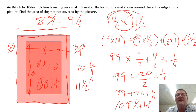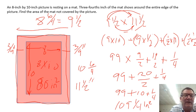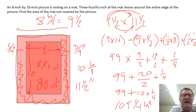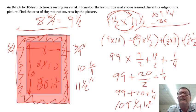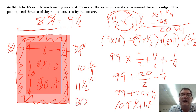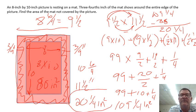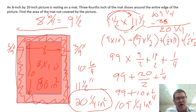The total mat area is one-hundred-nine and one-quarter inches squared. We have the picture at eighty inches squared and the mat at one-hundred-nine and one-quarter. To find the area not covered by the picture, we subtract: one-hundred-nine and one-quarter minus eighty. One-hundred-nine minus eighty is twenty-nine, so our answer is twenty-nine and one-quarter inches squared. Remember, we had to take the whole mat area and subtract the picture to find what wasn't covered.